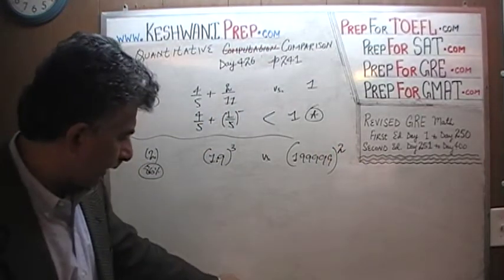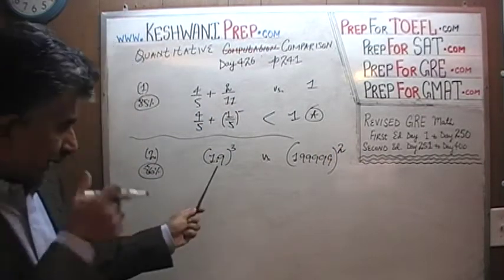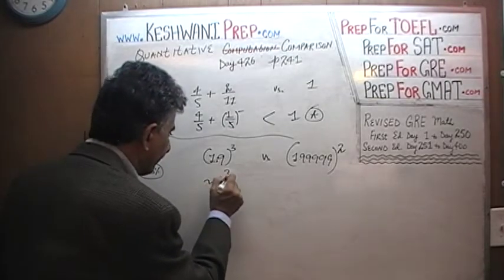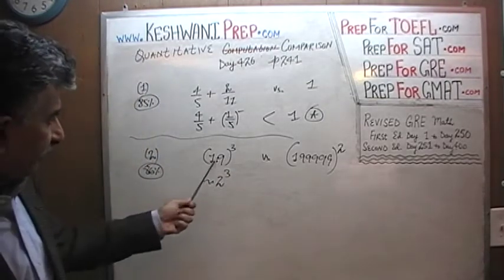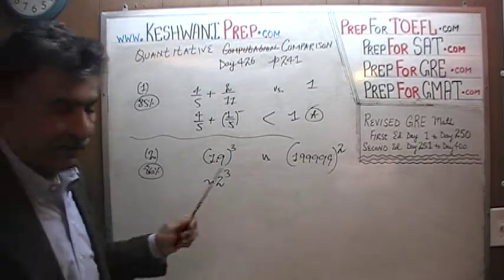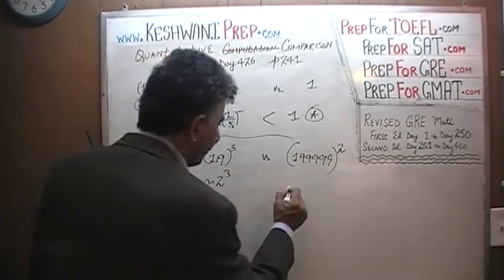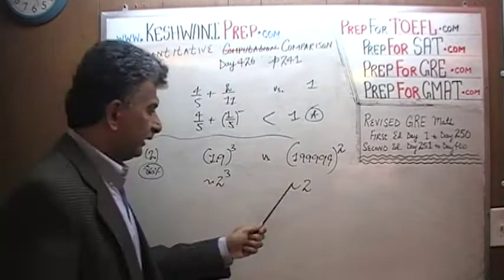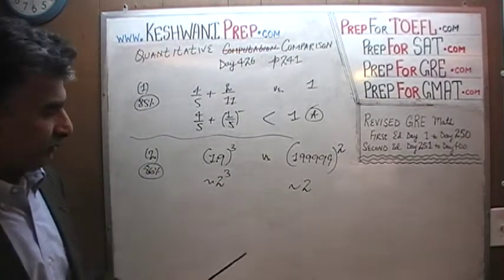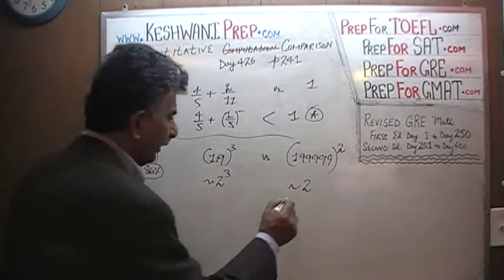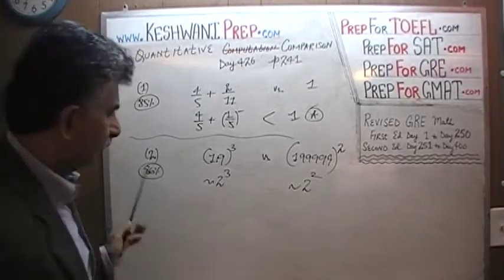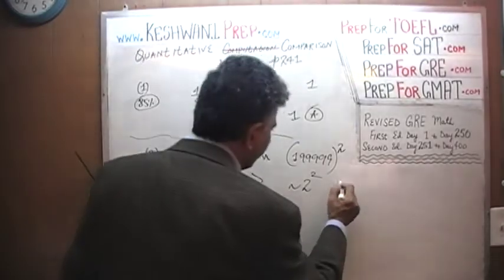Well, 1.9 is approximately 2, so this quantity is approximately 2 cubed. And 1.99999 is approximately 2 as well. The fact that 1.99999 is actually closer to 2 than 1.9 is doesn't matter, because we are comparing approximately 2 squared versus approximately 2 cubed. Of course 2 cubed is bigger. The answer is B.